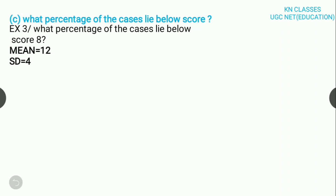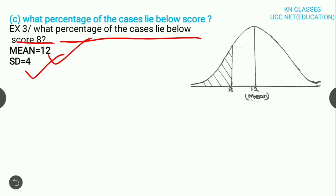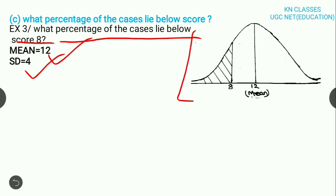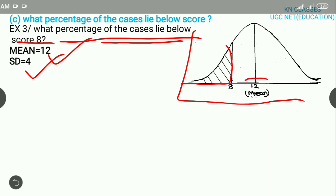What percentage of the cases lie below score? The score is 8 and mean is 12 and standard deviation is 4. First of all, draw the diagram here. Look here. The question is given that how much cases lie below the score 8. Here, the mean is 12. We need to find below score 8.